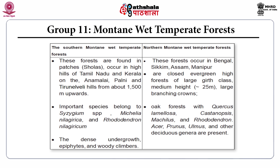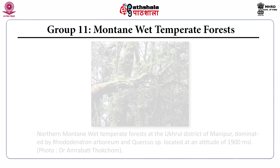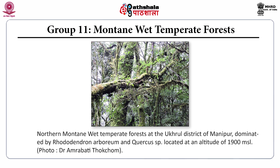The northern mountain wet temperate forests occur in Bengal, Sikkim, Assam, and Manipur. These are closed evergreen high forests of large girth classes with medium height and large branching crowns. The oak forests are a characteristic of these northern wet temperate forests. An example from the Ukhrul district in Manipur shows northern mountain wet temperate forests dominated by Rhododendron arboreum and Quercus species, located at an altitude of 1900 meters above mean sea level.